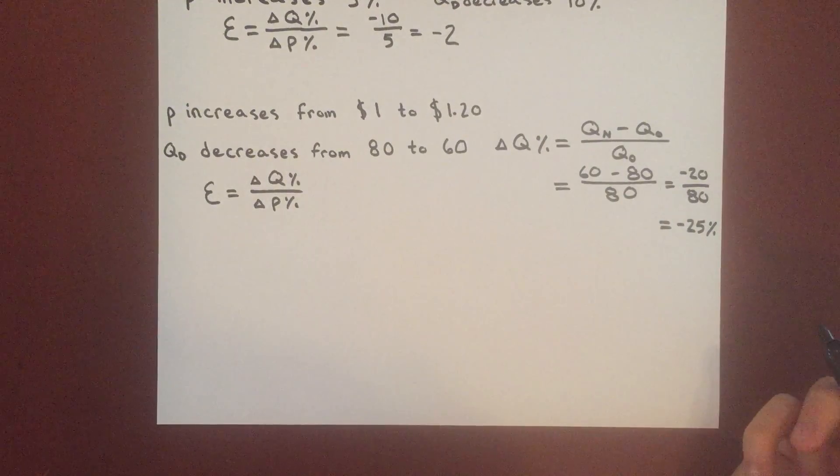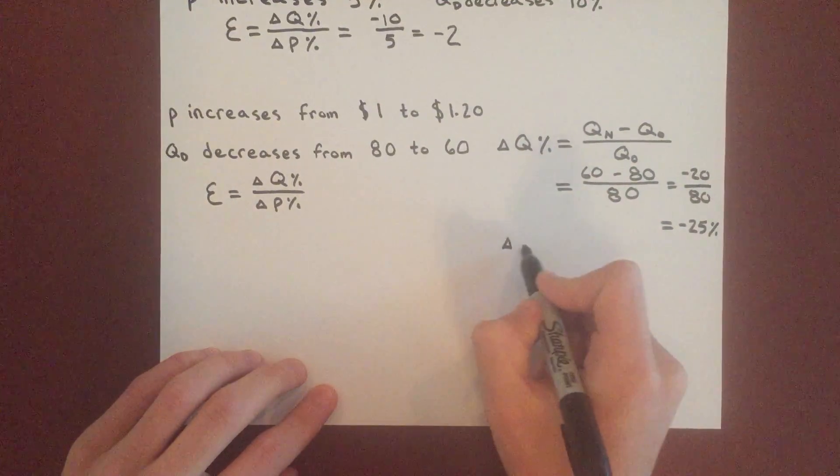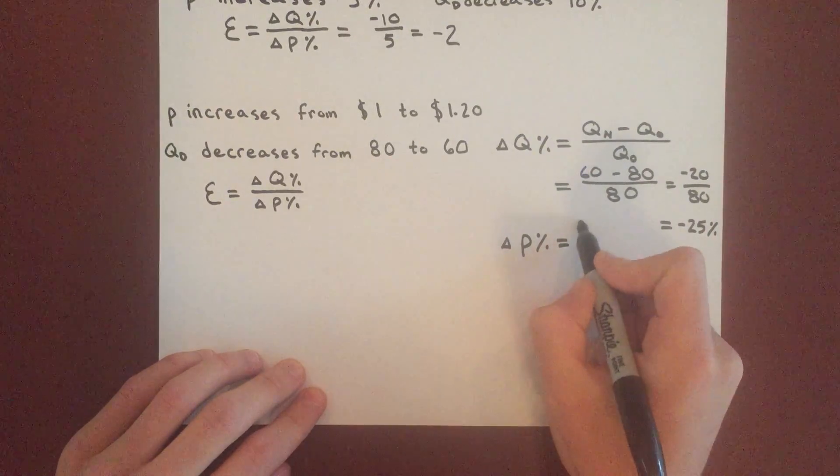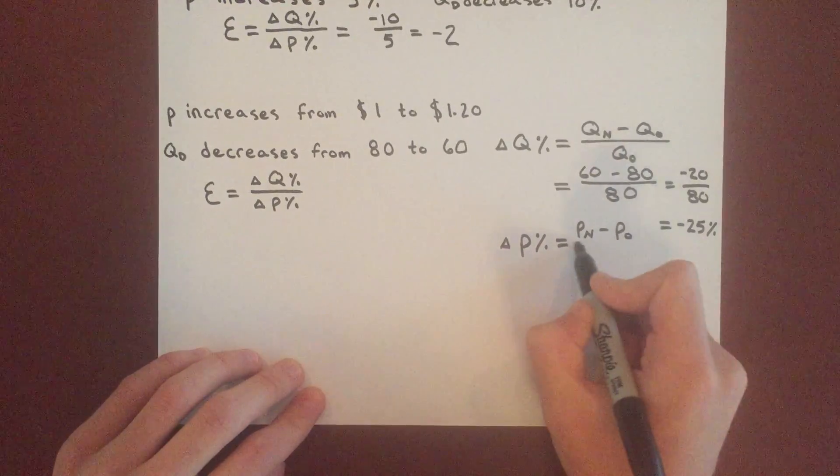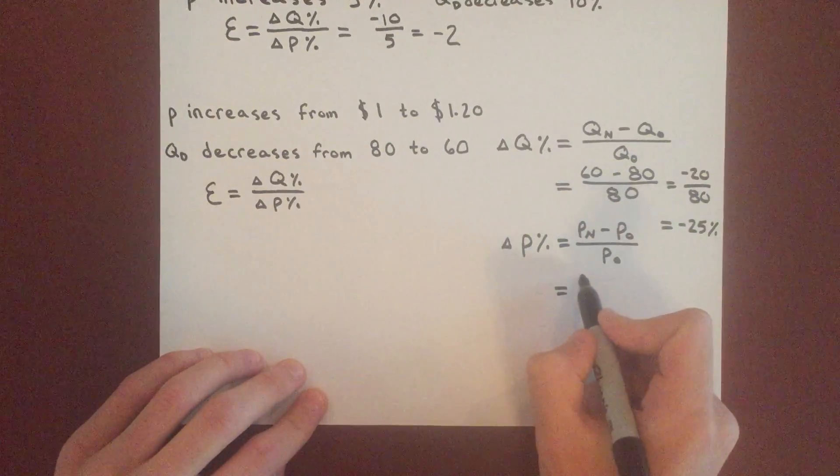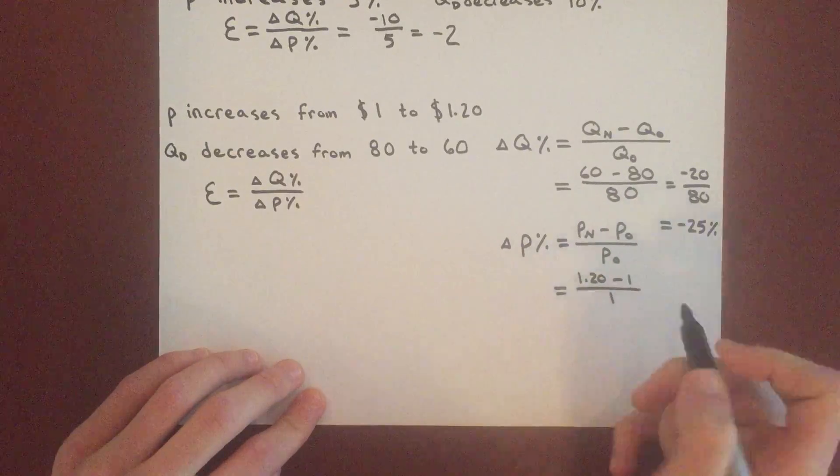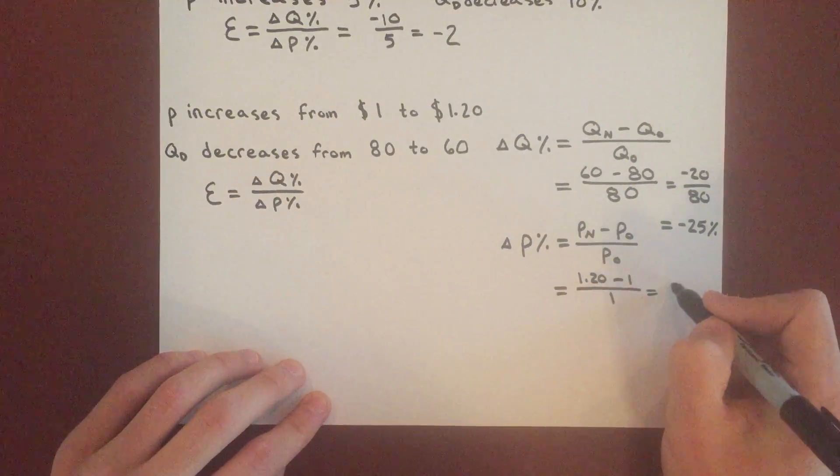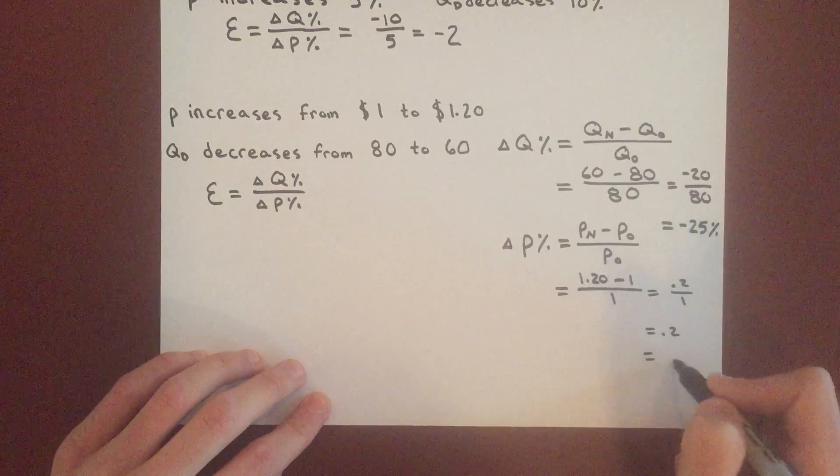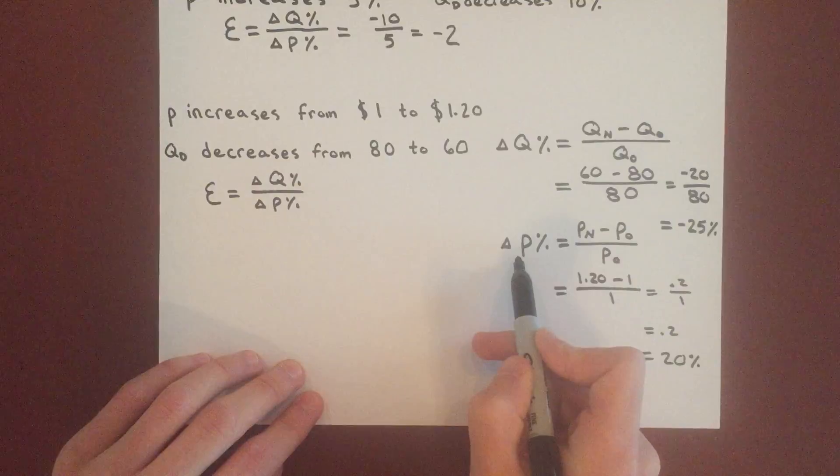For price, to find that it's really very similar. Change in price as a percentage equals P new minus P original over P original, which equals the new price 120 minus 1 over 1. So that's going to be 0.2 over 1, which is just 0.2, so 20%.